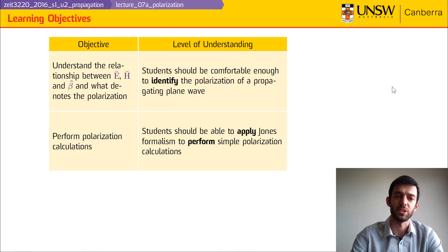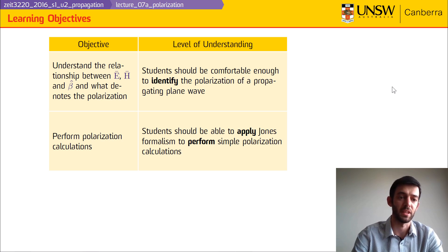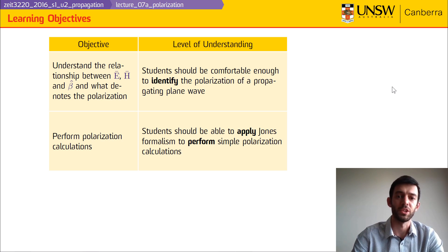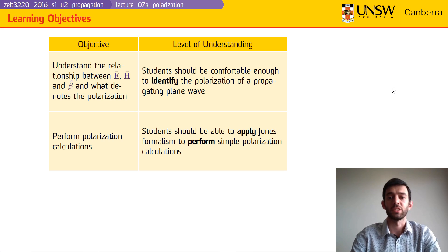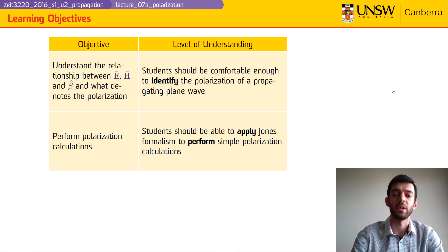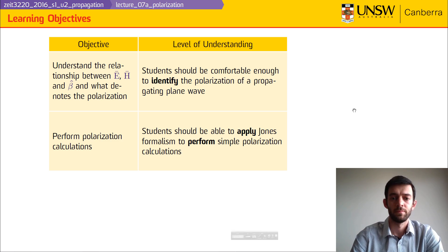The learning objectives are for us to understand the relationship between the electric field, the magnetic field, and the direction of propagation, and which parameter denotes the polarization. We should also be able to perform polarization calculations, and that will be done by employing Jones formalism to describe the fields and their transformation.